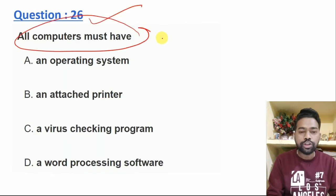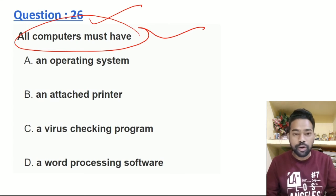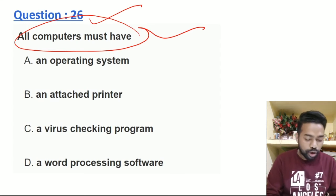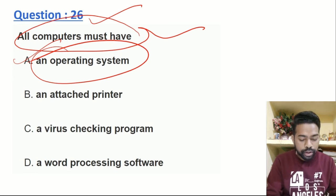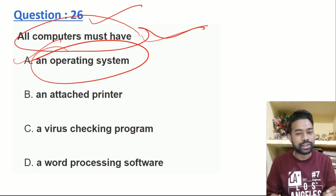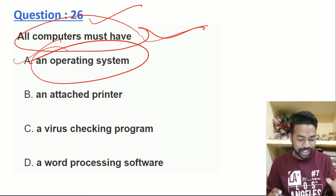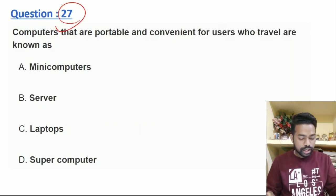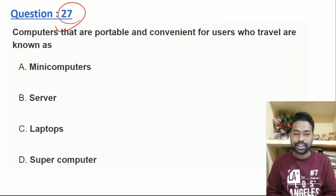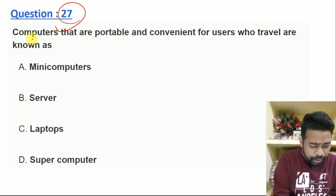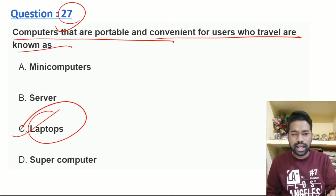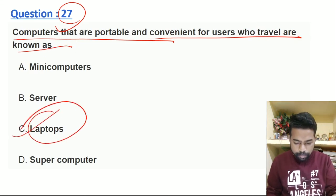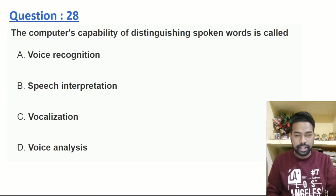All computers must have an operating system. The answer is the operating system — it is a compulsory thing. The operating system is required for the computer to start. Next, computers that are portable and convenient for user travel — this is the laptop. If we are convenient, we can easily travel. I think it is a repeat question.